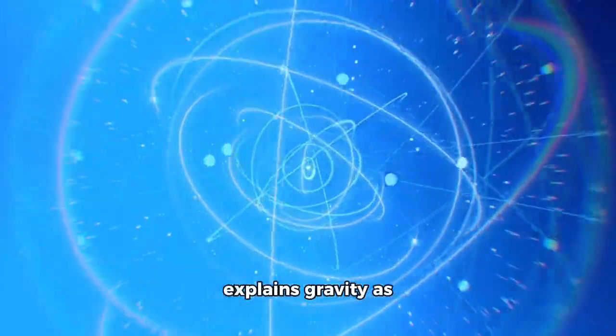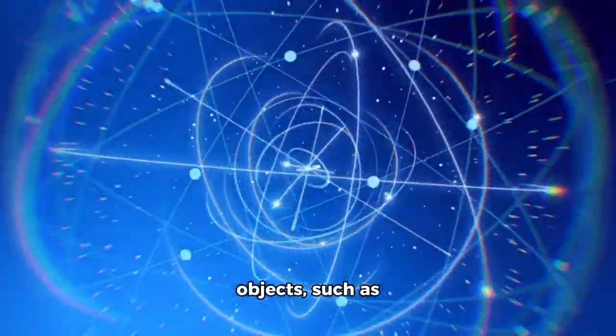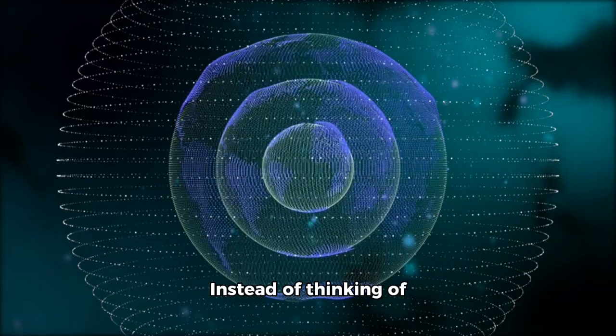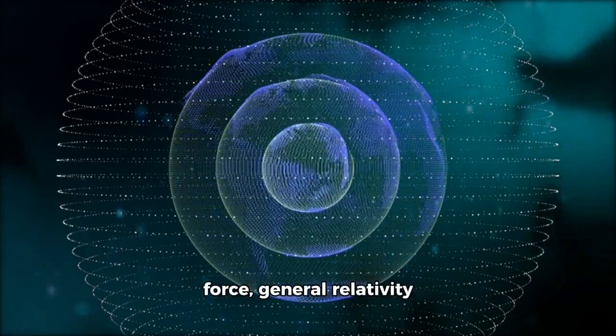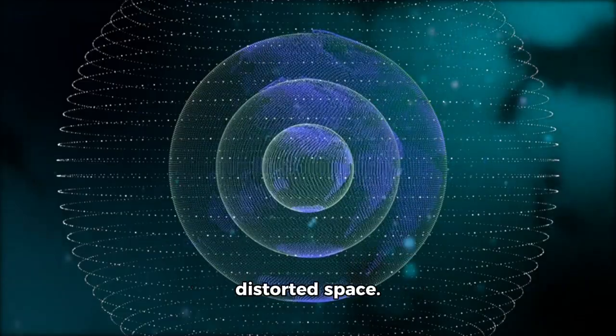Einstein's general relativity explains gravity as the warping of space and time by massive objects such as planets and stars. Instead of thinking of gravity as an invisible force, general relativity describes it as objects following curved paths in distorted space.